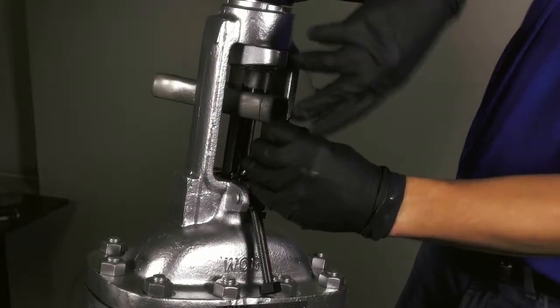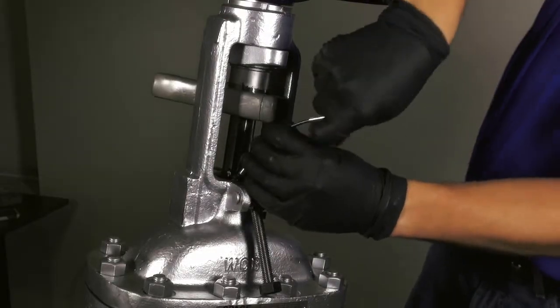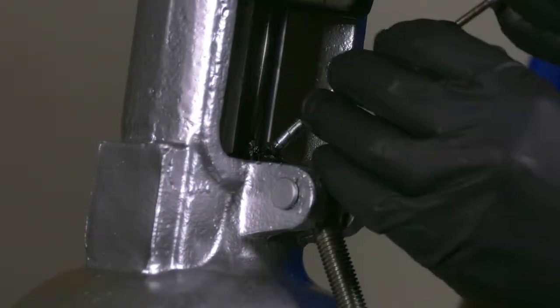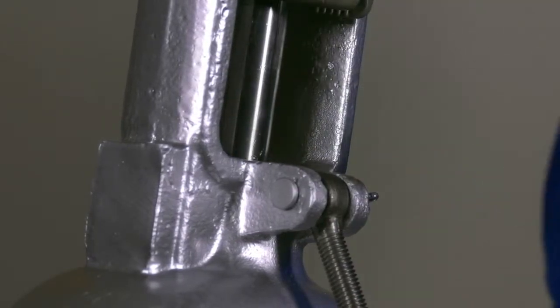Remove the existing packing, taking care not to damage the stem with the packing puller. Damage to the valve stem will create a leak path, allowing emissions to leak to atmosphere.